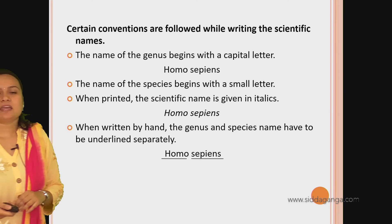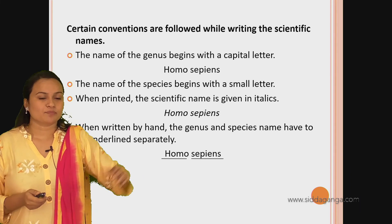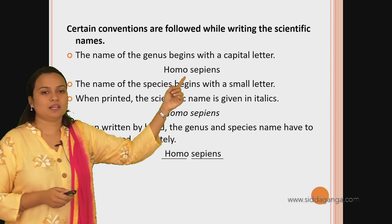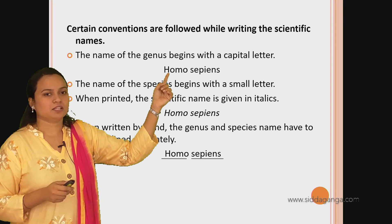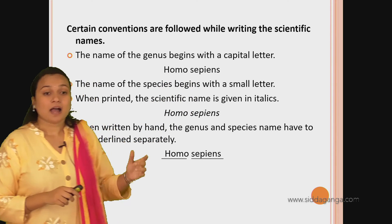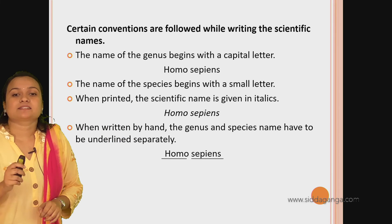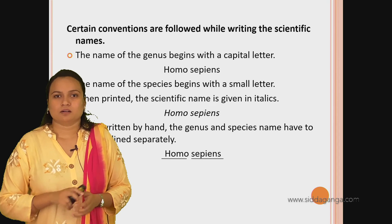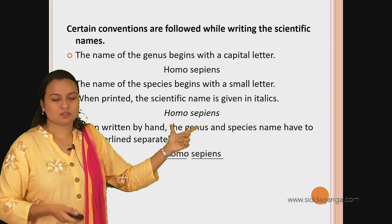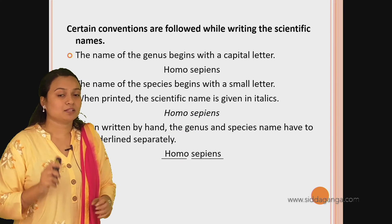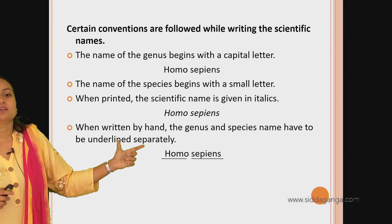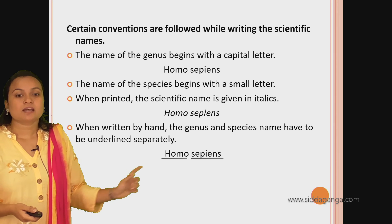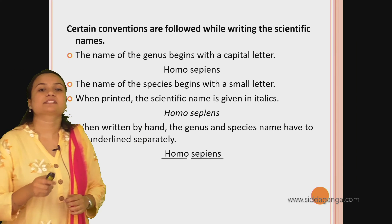There are certain conventions followed while writing the scientific name. The scientific name of a genus begins with a capital letter, whereas the scientific name of species begins with a small letter. When printed, the scientific name is given in italics - if using a laptop or typing, you must change the font to italic. Whereas when handwritten, the genus and species name have to be underlined separately. These are the rules to write scientific names.